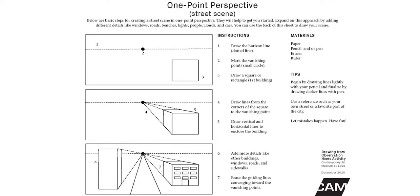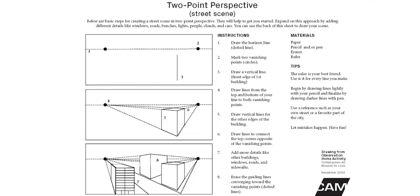On the museum website, the Drawing from Observation event page has worksheets where you can practice one-point and two-point perspectives. These are PDFs you can download — they include step-by-step instructions to get you started and you can build upon them to make the composition your own. Materials needed are paper, a pencil or pen, an eraser, and a ruler. If you don't have a ruler, a straight edge like a book or piece of cardboard works well. We have worksheets for both one-point and two-point perspective.